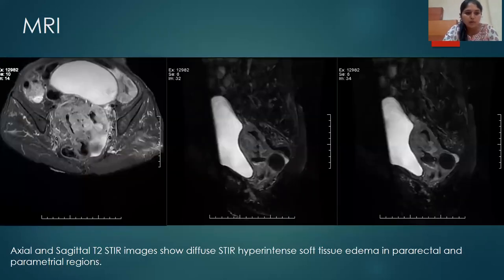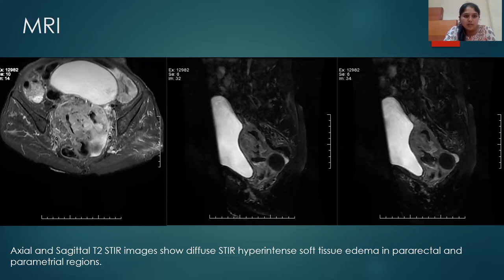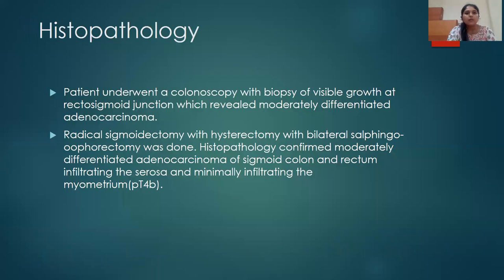We also have axial and sagittal T2 STIR images which showed diffuse hyperintense soft tissue edema in the pararectal and parametrial regions, and there was nodularity as well which later turned out to be enlarged lymph nodes. Initially the patient underwent a colonoscopy with biopsy of the visible growth at the rectosigmoid junction, which revealed moderately differentiated adenocarcinoma — which was not surprising.